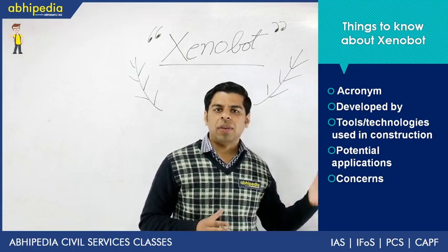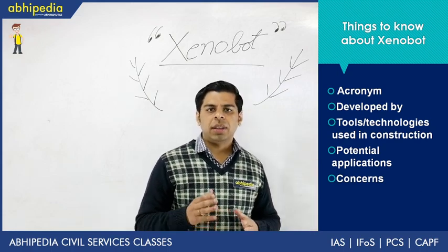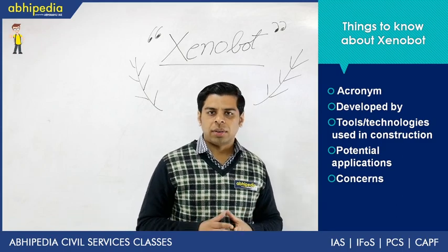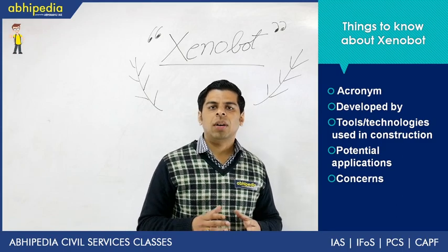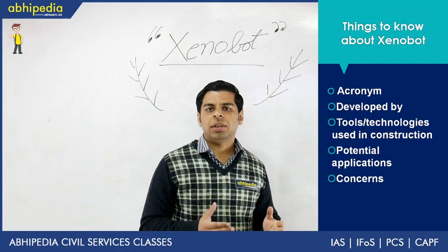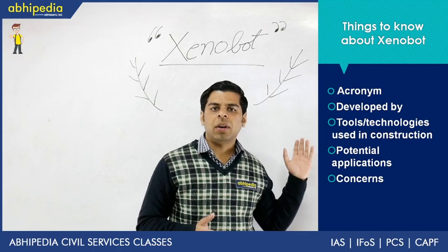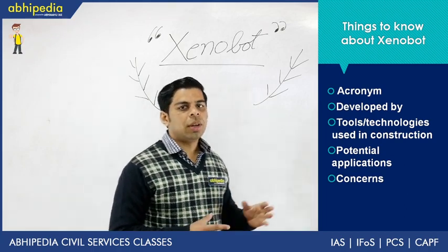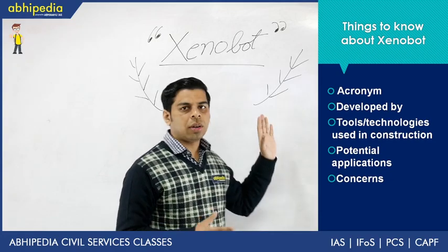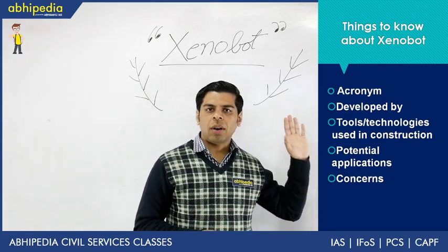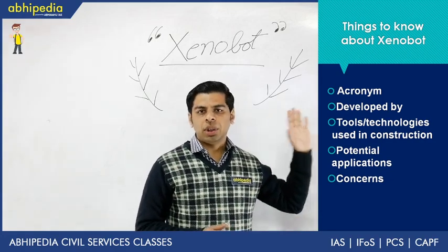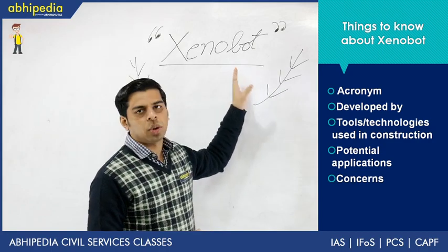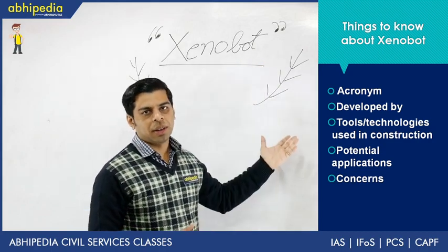The scientific name of the African clawed frog is Xenopus laevis, and they have borrowed the term 'Xeno' from that frog. Its distribution is widespread — found from Nigeria to Somalia to South Africa. Make sure you are familiar with this. So 'Xenopus' is what this nomenclature is based on, and 'bot' stands for robot.